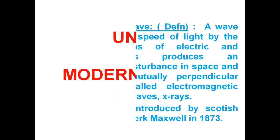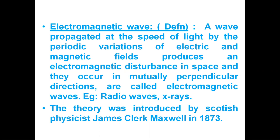Now, what is an electromagnetic wave? The definition is: a wave propagated at the speed of light. An electromagnetic wave is one that travels at the speed of light, which is 3 × 10⁸ meters per second, or 3 lakh kilometers per second. It is produced by the periodic variation of electrical and magnetic fields — when the wave propagates, there are two fields, electrical and magnetic.